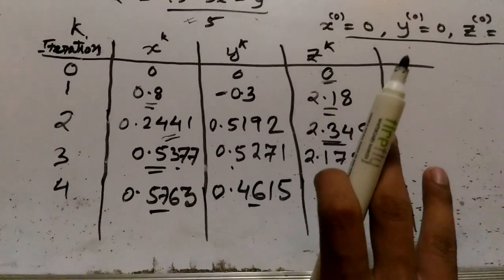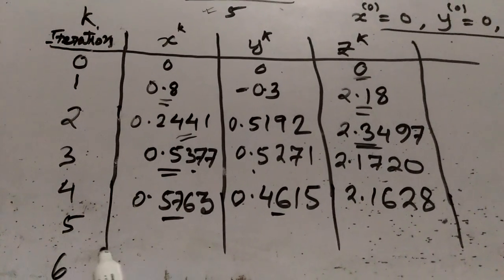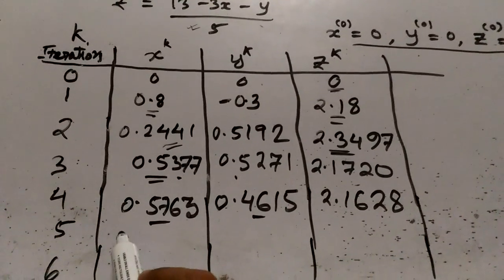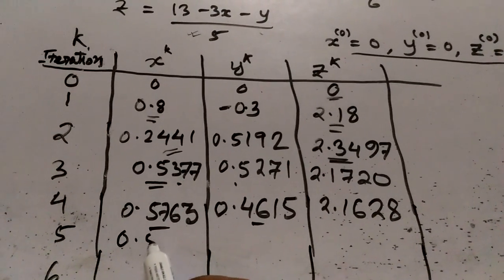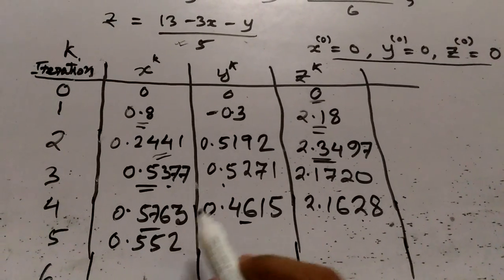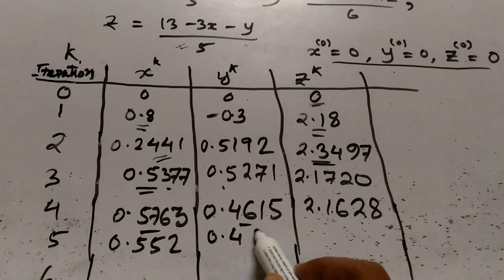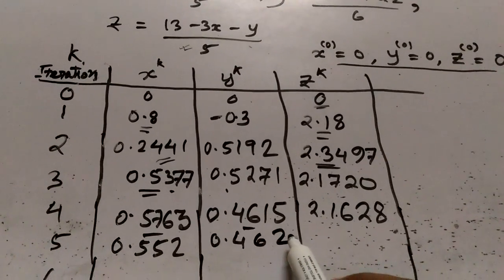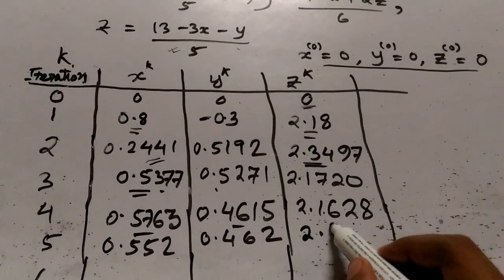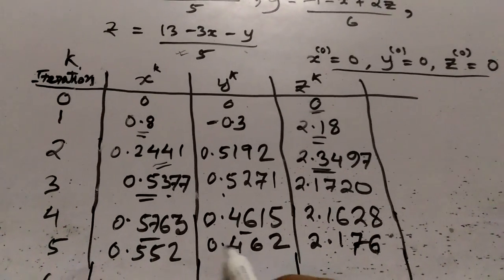In the fifth iteration, I calculate x from the previous z and y values as x = 0.5552. The y value from the current x and previous z is y = 0.462, and z calculated from the current x and y values is z = 2.176.